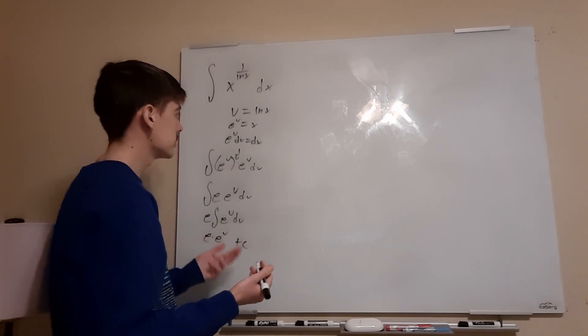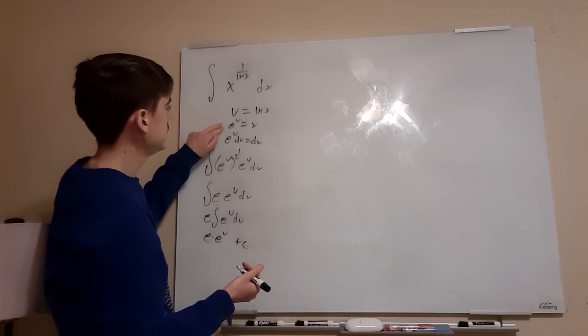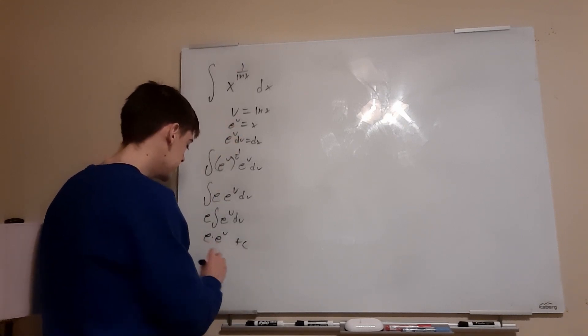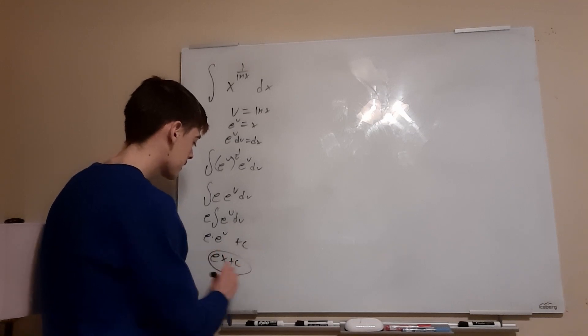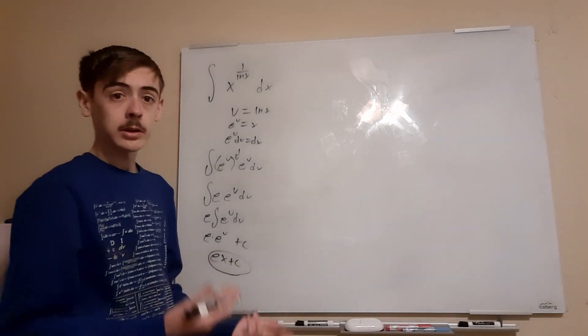And now we can just back substitute. So we know that e to the u equals x. So we'll just be left with ex plus c. And really quick, that's our answer.